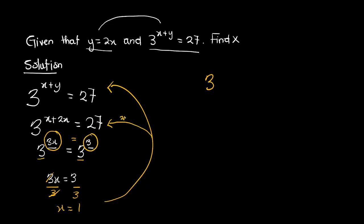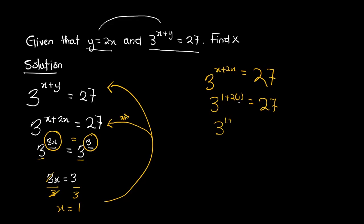Using the second equation: 3 raised to the power x plus 2x equals 27. Substituting x equals 1: 3 raised to the power 1 plus 2 times 1. This gives 3 raised to the power 1 plus 2, which is 3 raised to the power 3. And 3 raised to the power 3 is 27. So our answer is correct.